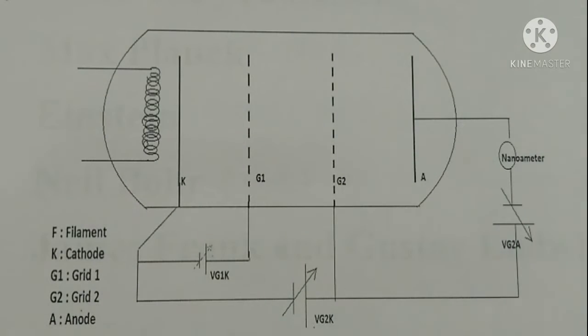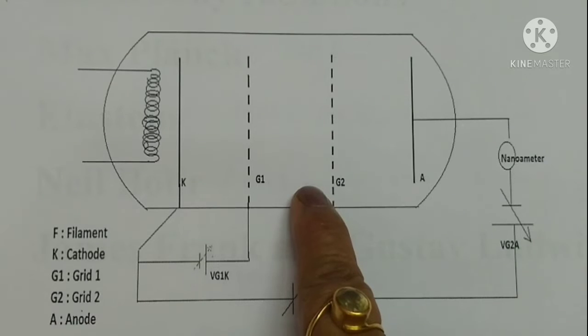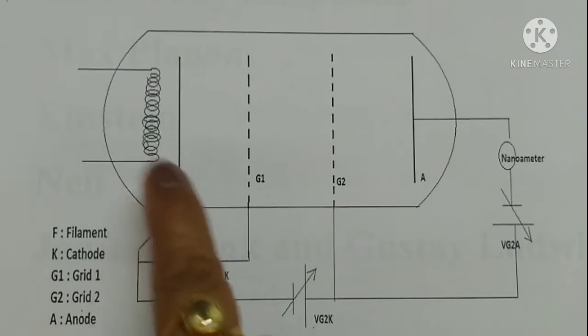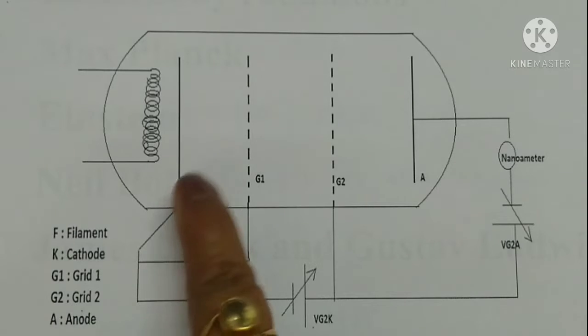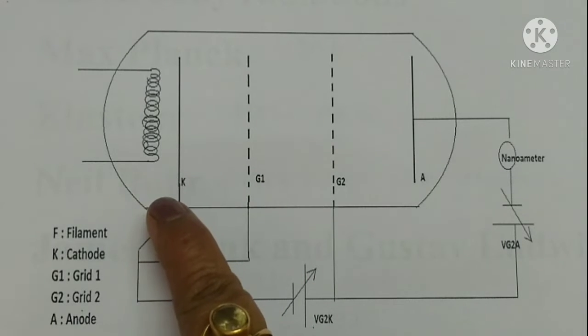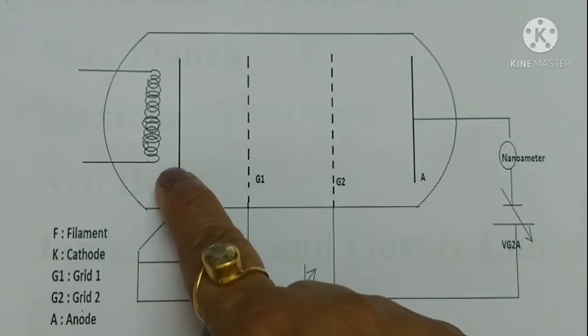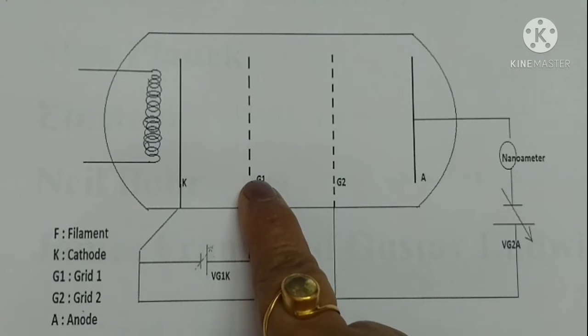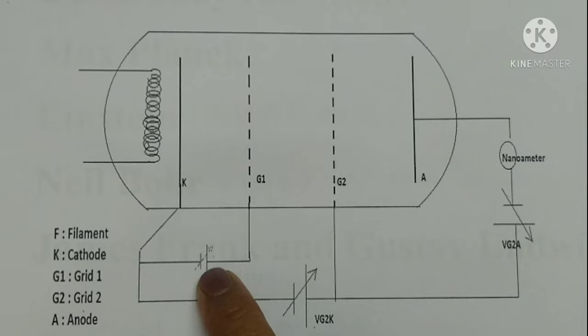It consists of a filament which heats up the cathode. K is an indirectly heated cathode and it emits electrons by thermionic emission. When electrons are emitted, they form a cloud near the cathode. To avoid this, we put a grid G1 which is kept at a positive potential with respect to the cathode.